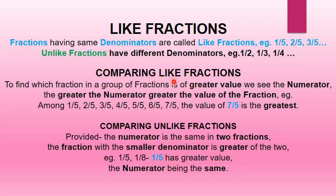Comparing like fractions. To find which fraction has the greater value among like fractions, we look at the numerator — the greater the numerator, the greater the value. For example, among 1 upon 5, 2 upon 5, 3 upon 5, 4 upon 5, 5 upon 5, 6 upon 5, 7 upon 5, the value of 7 upon 5 is the greatest.